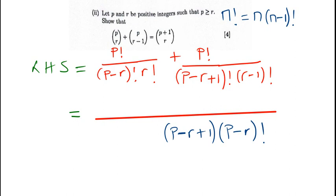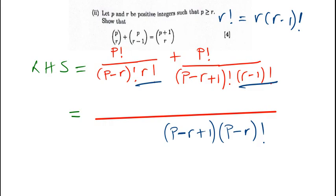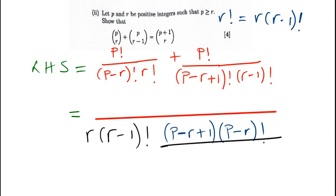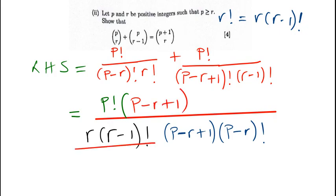Now compare r factorial and r minus one factorial — r factorial is bigger. If you expand it, r factorial equals r times r minus one factorial, so r minus one factorial is contained in r factorial. If we divide p minus r factorial into the first part, it divides out and we remain with p factorial on top, multiplied by the remainder p minus r plus one, because that combined part equals r factorial so there is no remainder there.